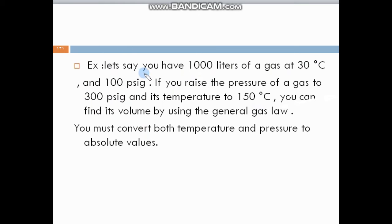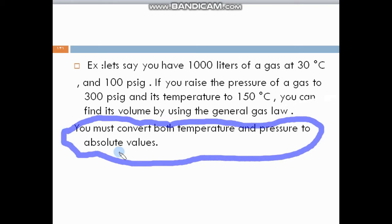Here we have an example. Let's say you have 1000 liters of a gas at 30 Celsius and 100 PSI gauge. If you raise the pressure of the gas to 300 PSI gauge and its temperature to 150 Celsius, you can find its volume by using the general law. But keep in your consideration, you must convert both temperature and pressure to absolute values, and we know how to change it.